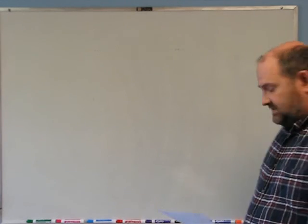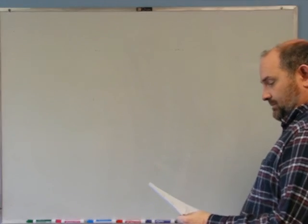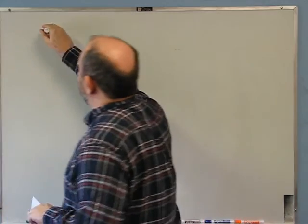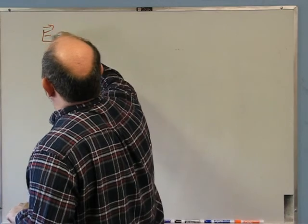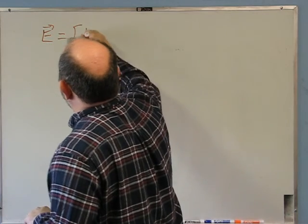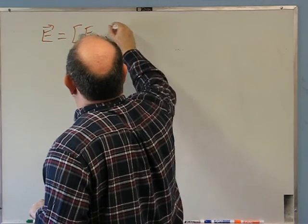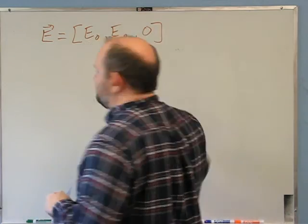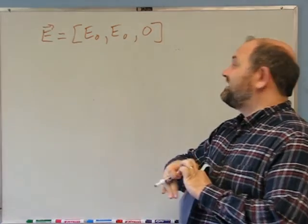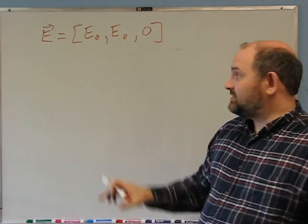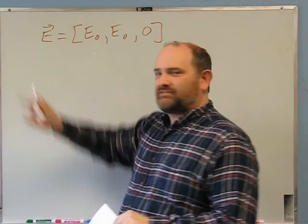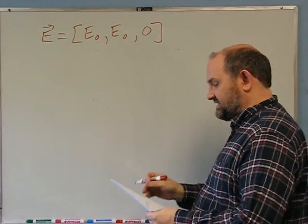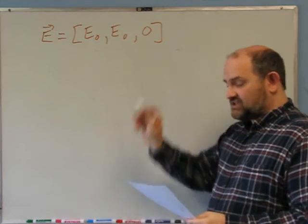We're now talking about electric fields. Here there is an electric field which everywhere has the value E vector equals (E0, E0, 0). Don't fall into the trap of thinking this is energy. Sometimes we use E for energy, but here E is electric field — you just have to know from context what it is. E0 is a constant.